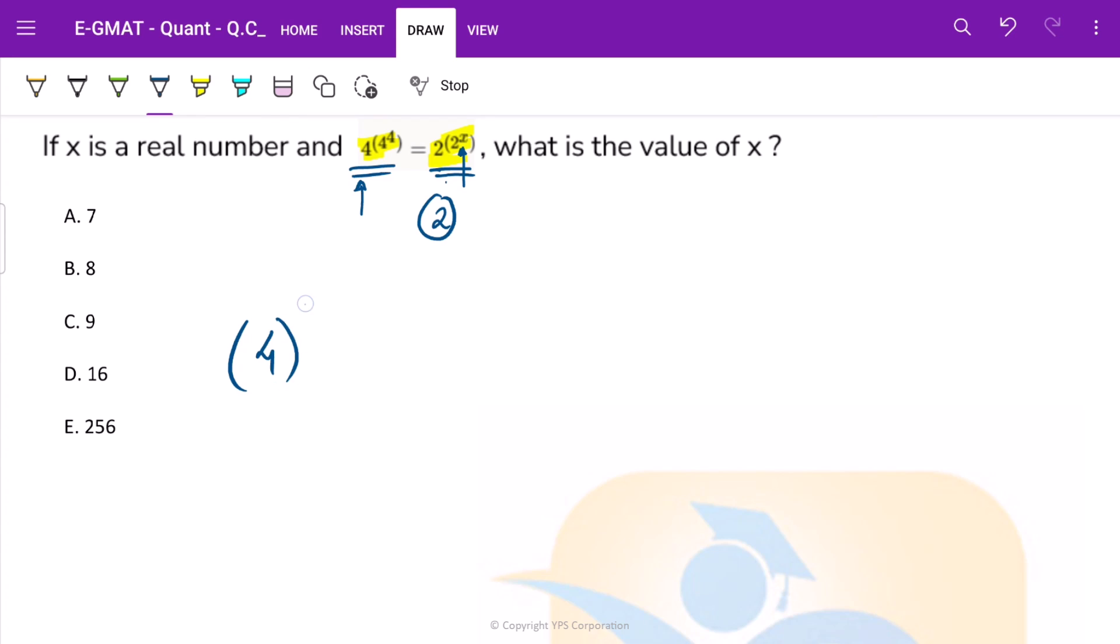So we have 4 raised to 4 raised to 4. It might seem daunting at first. Let us deal with only this part at first. So 4 raised to 4, this is basically what, 4 is 2 square raised to 4. So this is nothing but 2 raised to 2 into 4. This becomes 2 raised to 8.